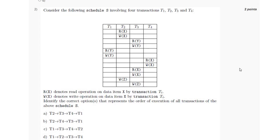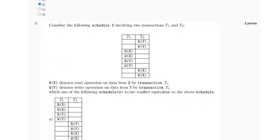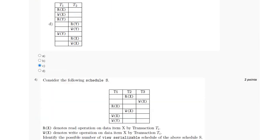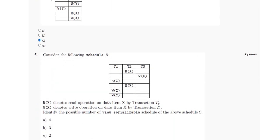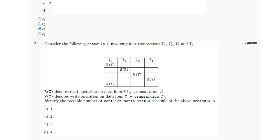For the third question, the answer is option C. For the fourth question, the possible number of view serializable schedules is option C, which is two. For the fifth question, the number of possible conflict serializable schedules is option D, which is four.